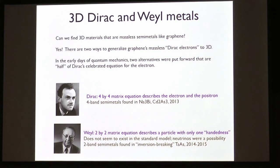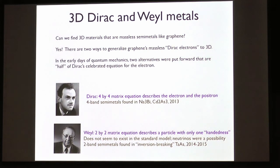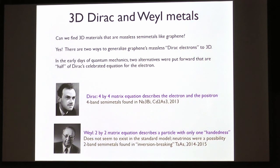Going back to the early days of quantum mechanics: Dirac discovered a 4×4 matrix equation for the special relativistic electron, which predicted the positron. Two people right after Dirac found two ways to separate the Dirac equation into two 2×2 equations. Hermann Weyl realized that for massless particles, if a particle is right-handed in one frame, you can never catch up with it and flip its helicity — so helicity for a massless particle is frame-independent. This lets you split the Dirac equation into right-handed and left-handed 2×2 equations, which are formally equivalent to what we call two-band linear band crossings.